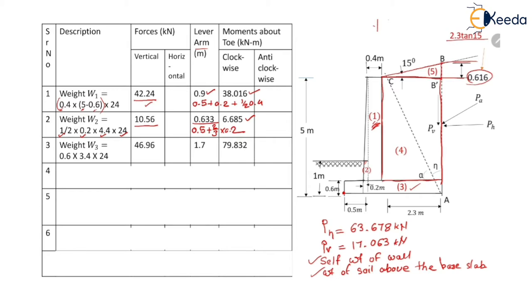Weight W3 is the weight of the base slab, equal to 0.6 (thickness) into 3.4 (total base width) into density 24, so W3 equals 49.96 kN. The lever arm equals 3.4 divided by 2, which is 1.7 meter. The clockwise moment about the toe is 46.96 into 1.7, equal to 79.832 kN·m.